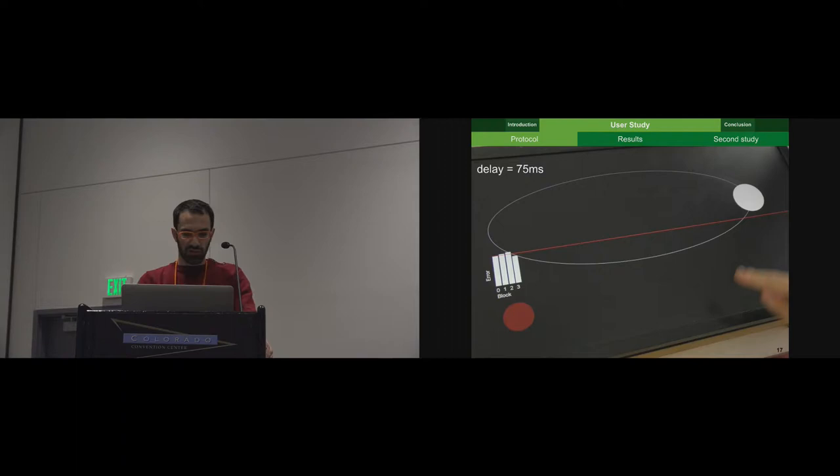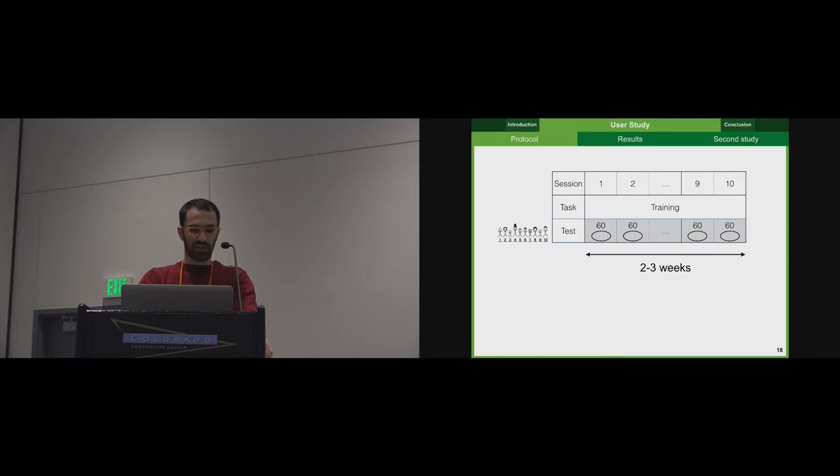And there is 60 trials per session, and each session lasts half an hour. So we train 10 participants on the tracking on the ellipse during 10 sessions of 60 trials spread over 2 to 3 weeks.